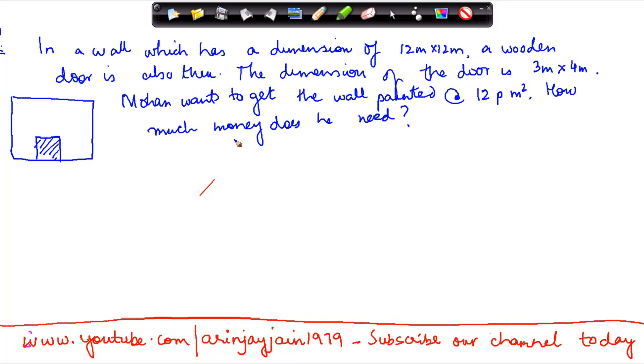This is a very interesting question. We know that there is a wall and the wall has an area of 12 meter by 12 meter. The dimensions of the length and breadth are 12 meters each. But we also know that there is a door which is 3 meter by 4 meter.